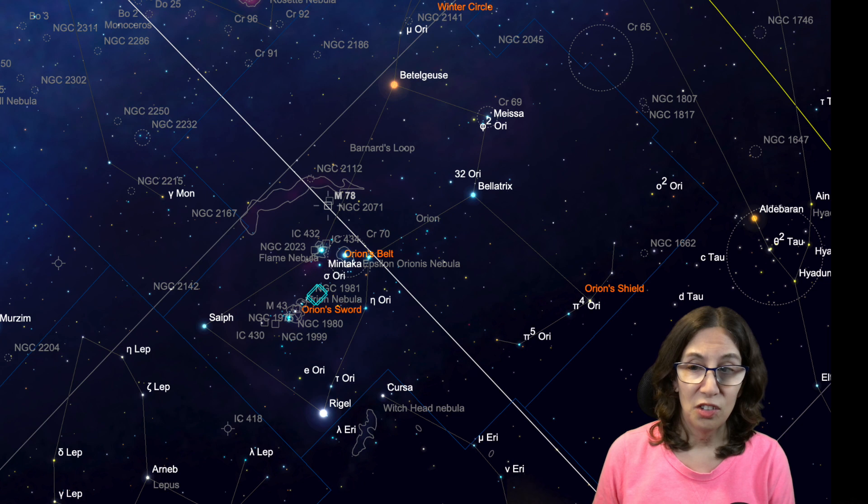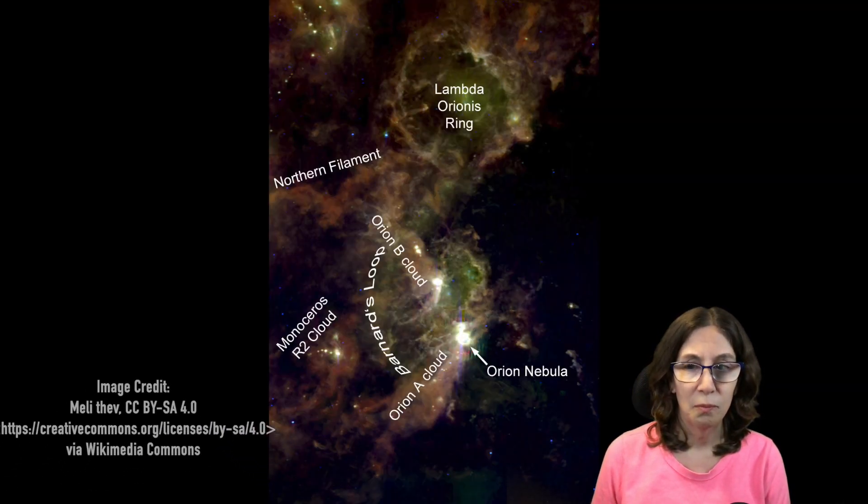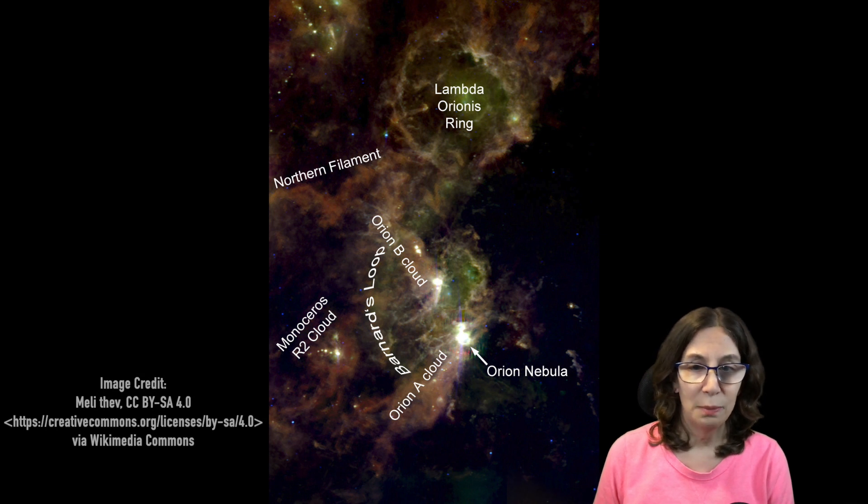Orion is one of those places in the sky where a lot seems to be happening. The reason for that is the Orion Molecular Cloud Complex. Try saying that three times fast. This complex is made up of two giant clouds, referred to as Orion A and Orion B. M78 is part of Orion B.